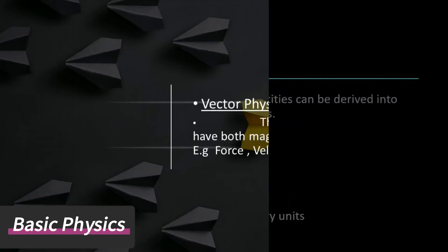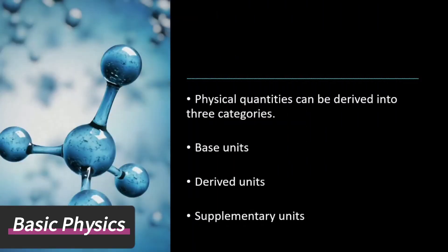Physical quantities can be derived into three categories: base units, derived units, and supplementary units.